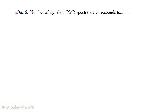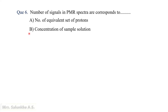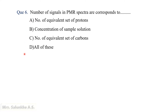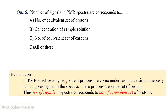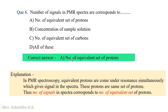Question 6: The number of signals in PMR spectra corresponds to — number of equivalent sets of protons, concentration of sample solution, number of equivalent sets of carbons, or all of these? In PMR spectra, when a molecule is placed in an applied magnetic field, all protons do not come under resonance at the same time. Protons that come under resonance simultaneously are equivalent protons forming a set. The number of signals corresponds to the number of equivalent sets of protons. Therefore, the answer is A.